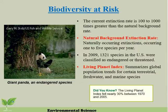In 2009, the U.S. classified over 1,300 species as endangered or threatened. Later on we'll learn about the difference between endangered and threatened. The Living Planet Index summarizes global population trends for certain terrestrial — terrestrial meaning land — and freshwater and marine species. Do we know how many of every single species on the planet there are? No, but scientists do their best to come up with some estimations.